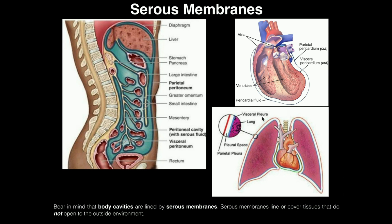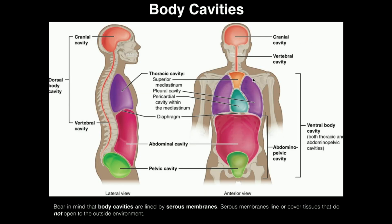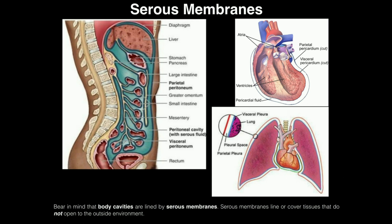How do you tell the difference between which is which? The parietal always lines the wall of the cavity. If we look at the pleural area, the serous membrane that lines the cavity — the most superficial membrane — is always the parietal. The visceral membrane, in each case, lines the surface of the organ itself.